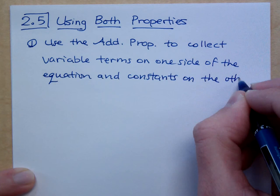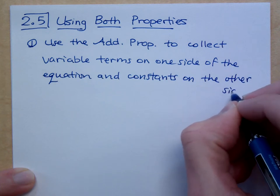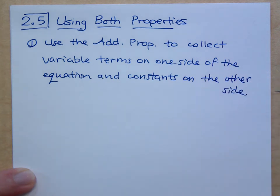So we use the addition property to get variable terms on one side of the equation and constants on the other side. Remember that old Offspring song, you got to keep them separated? That's what you're doing here. Put your variable terms on one side, your constants on the other side.